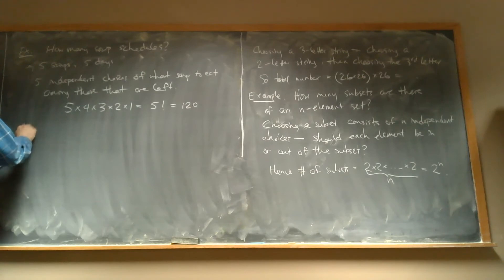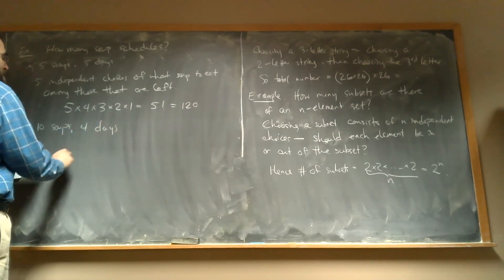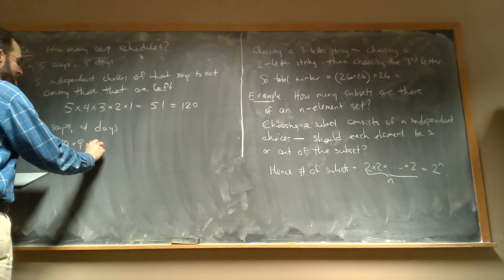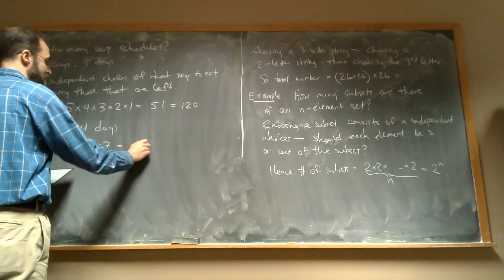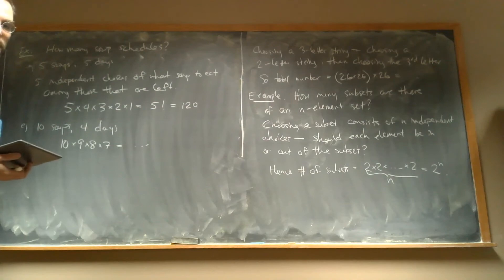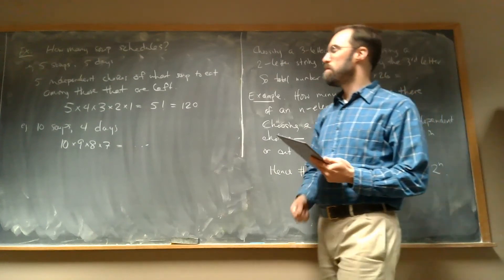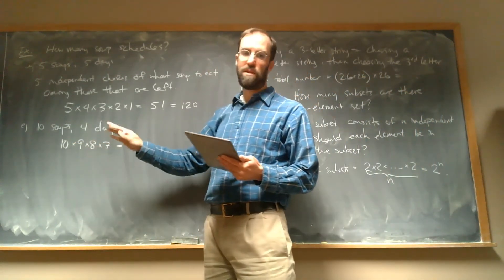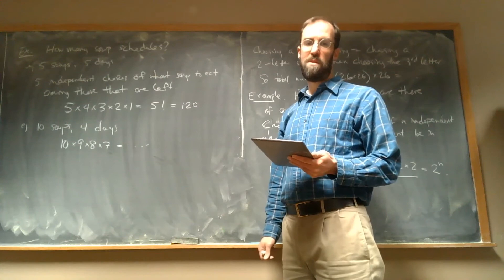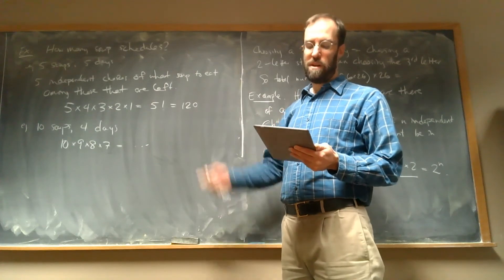Or if I had ten soups and four days, it would be ten choices for the first day, then nine, then eight, then seven — use your calculator for the result. There are formulas you could memorize: the number of permutations of n things is n factorial, and if you only want a certain number of them it's something related to factorials. But memorizing the formulas is not important. What's important is to understand how the product rule helped us derive this.